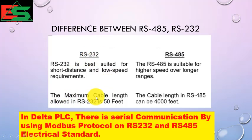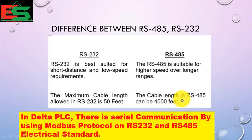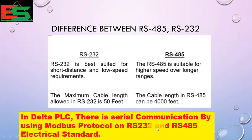The maximum cable length allowed for RS-232 is 50 feet. But in case of RS-485 the cable length is more than 4000 feet — it is a very long range communication standard. In Delta PLC, serial communication is done using Modbus protocol on both RS-232 and RS-485 electrical standards.